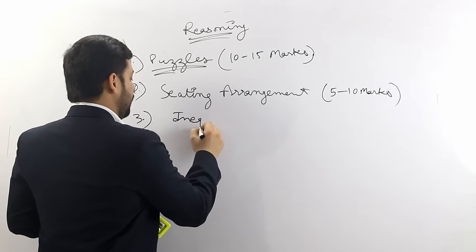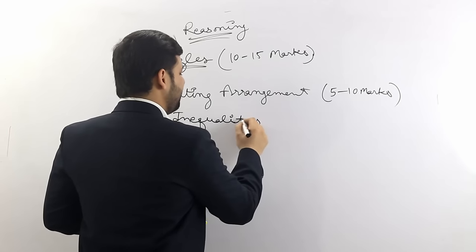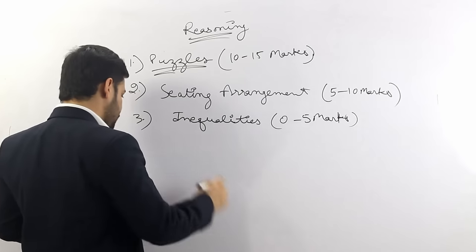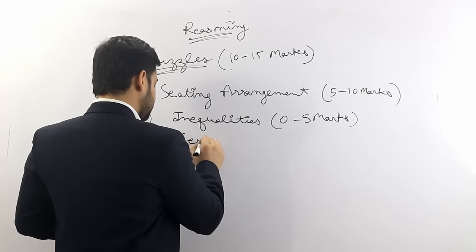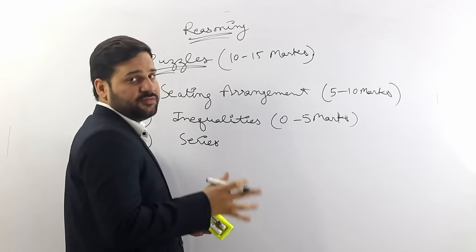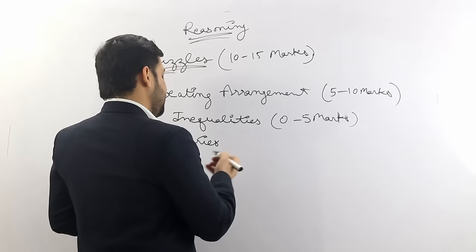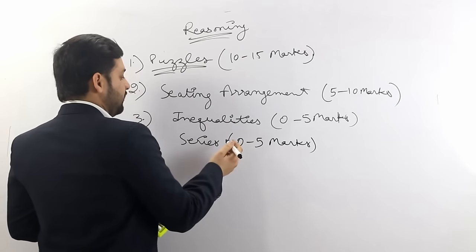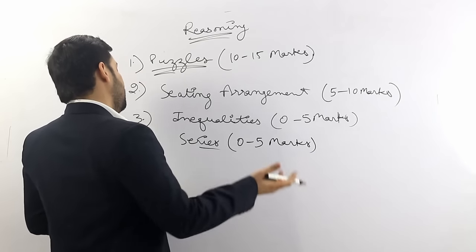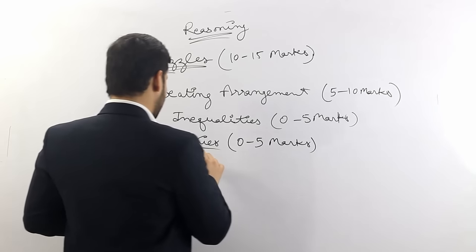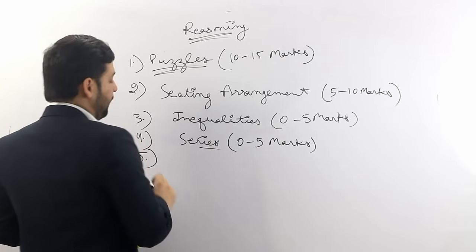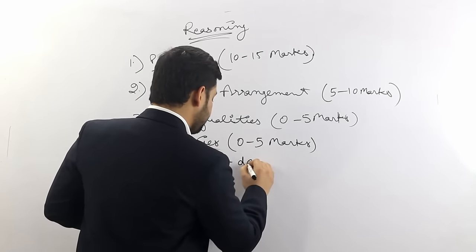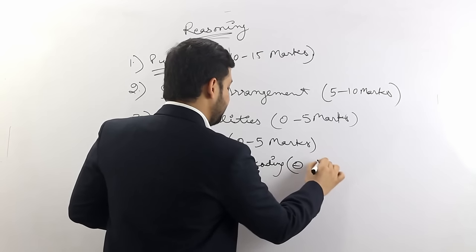Then there is series again — alphabetical series, which is a little different from the series asked in the quantitative aptitude section. Sometimes 5 questions from the reasoning section and 5 from QT are asked, making a total of 10 questions from the series chapter in the exam. Then there is coding and decoding — 0 to 5 marks.